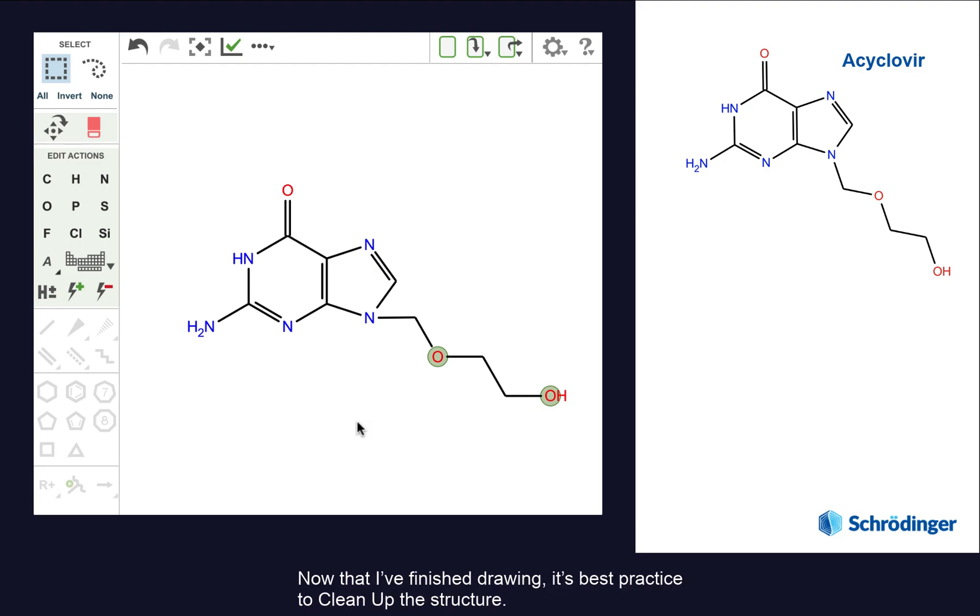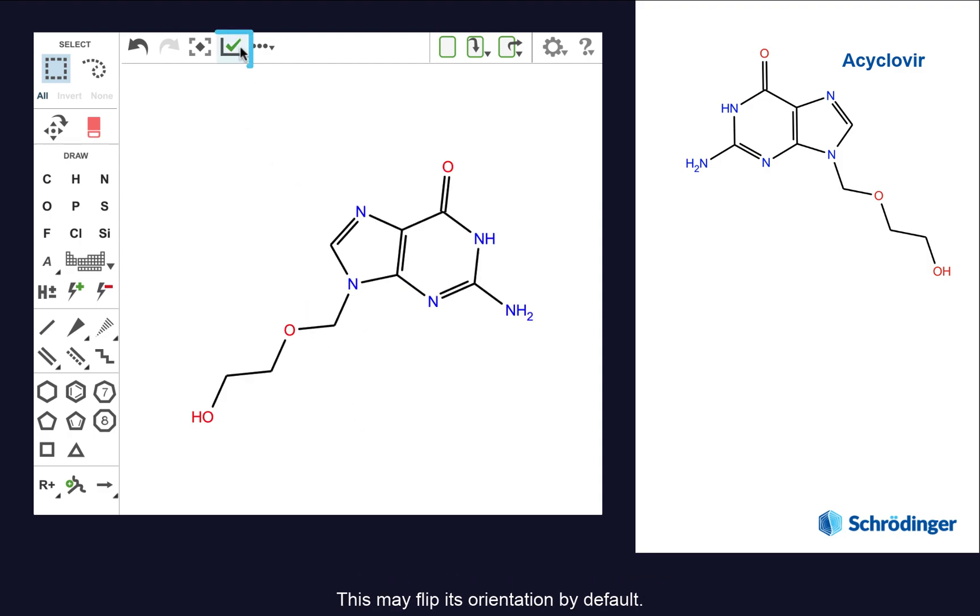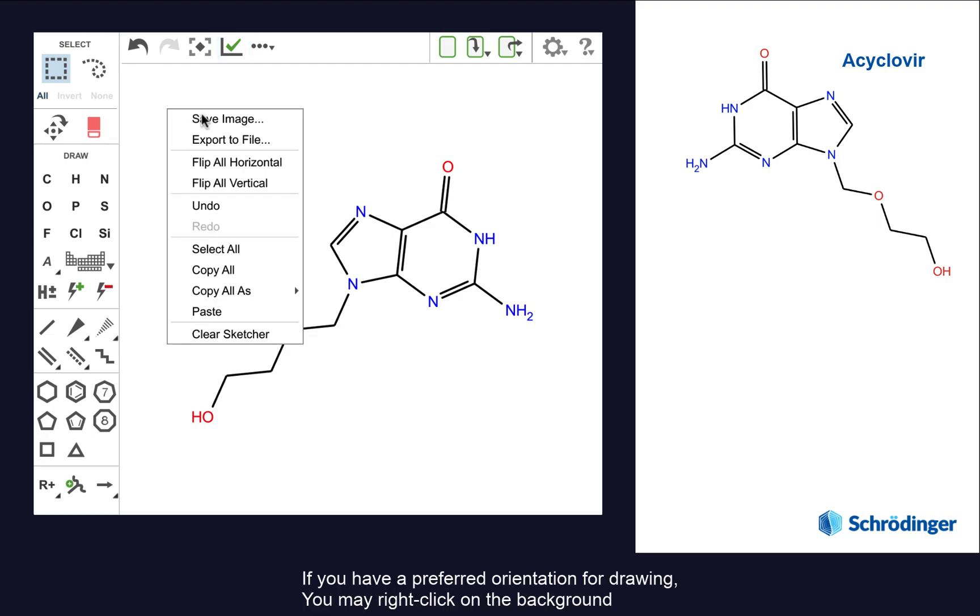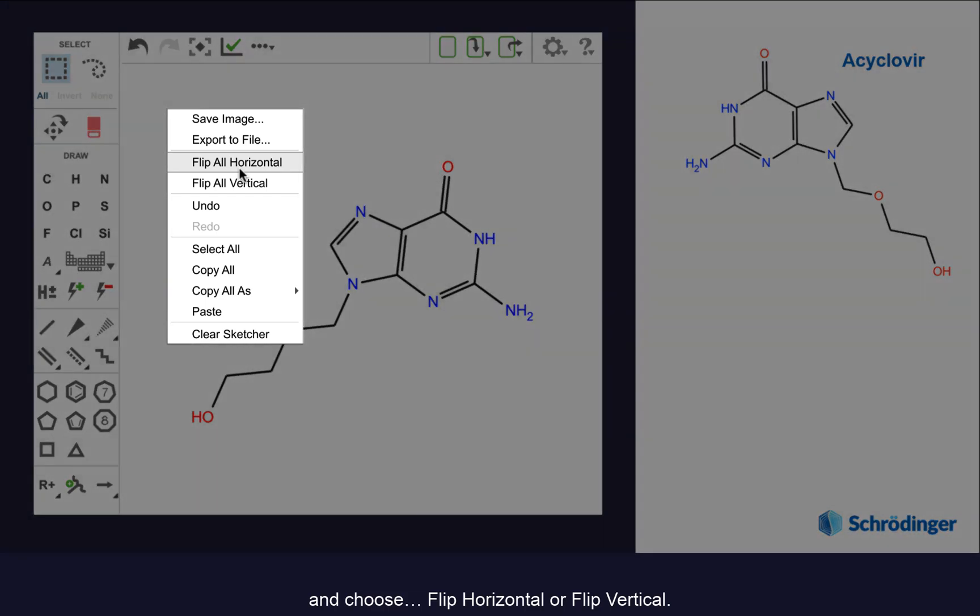Now that I've finished drawing, it's best practice to clean up the structure. This may flip its orientation by default. If you have a preferred orientation for drawing, you may right-click on the background and choose flip horizontal or flip vertical.